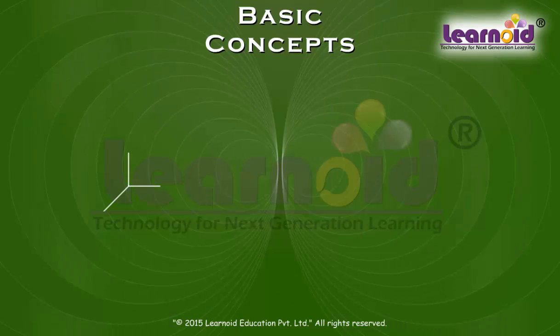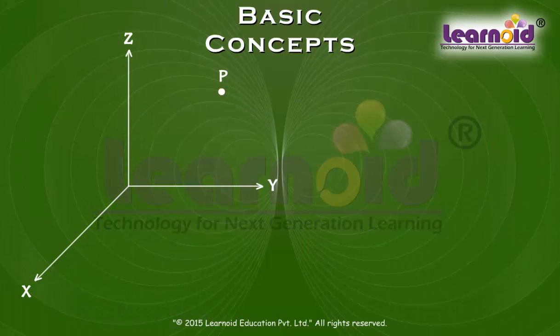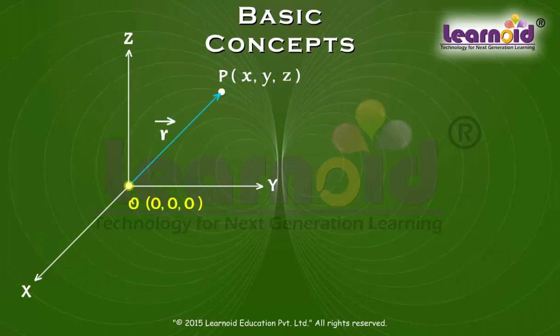If you recall the three dimensional rectangular coordinate system, consider a point P in space having coordinates X, Y and Z with respect to the origin O (0, 0, 0). Then the vector OP having O as its initial point and P as terminal point is called the position vector of point P with respect to O.